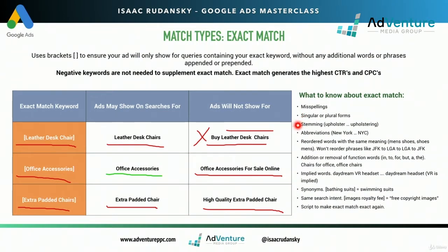Stemming: 'upholster' and 'upholstering' — so if my keyword is 'upholster shop near me' and somebody searches for 'upholstering shop near me,' Google retains the right to trigger that exact match keyword. Abbreviations: if my keyword says 'New York City' or 'New York' and somebody searches for 'NY' or 'NYC,' Google retains the right to show my ad even though it's an exact match keyword.